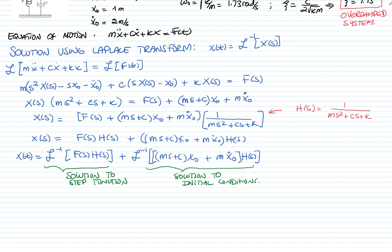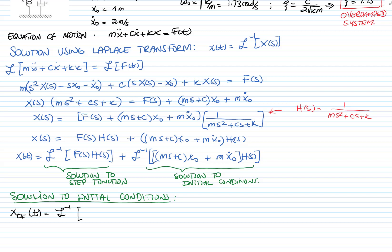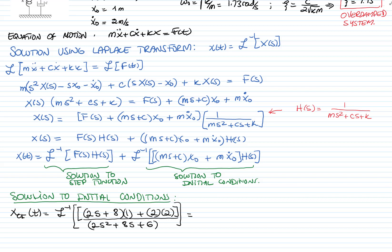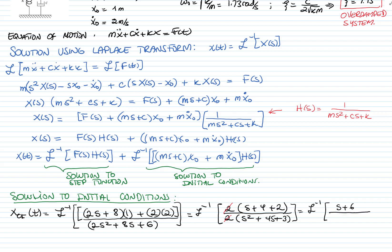Let's start with the solution for the initial conditions. Applying the given numbers, we have the Laplace transform: (2s + 8) times the initial displacement of 1, plus the mass times the initial velocity, all divided by the denominator 2s² + 8s + 6. Taking out the factor of 2, the numerator becomes s + 6, and the denominator factorizes as (s + 1)(s + 3).